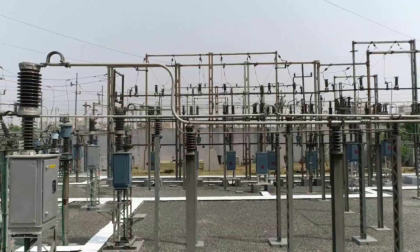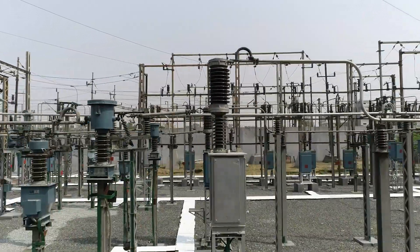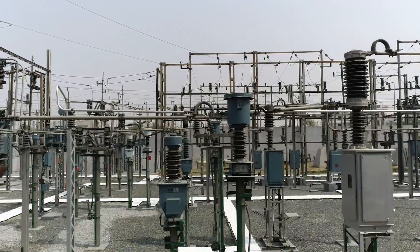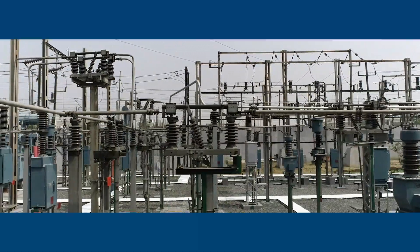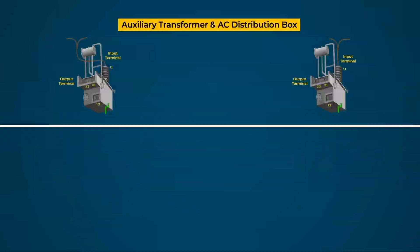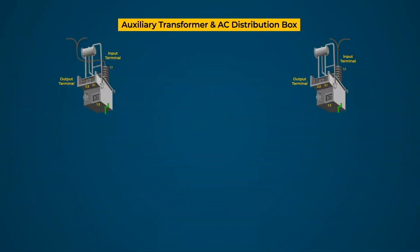Power supply for all electrical loads of the substation is supplied by two single-phase Auxiliary Transformers connected to both ends of the 25 kV common bus bar.